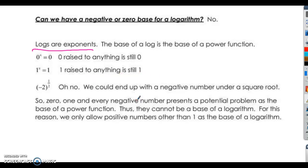Well, let's say you have negative 2 to the 1 half power, we could end up with a negative number under a square root, right? Because negative 2 to the 1 half power is the same thing as the square root of negative 2. Well, that's a problem here. So we're not dealing with imaginary numbers.